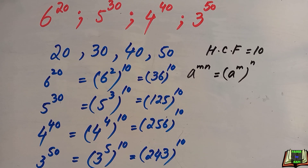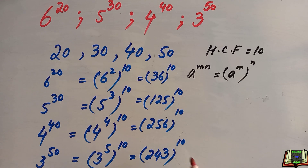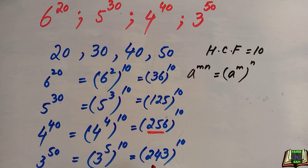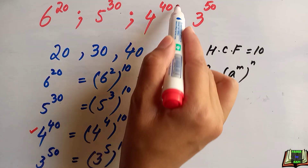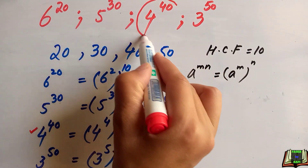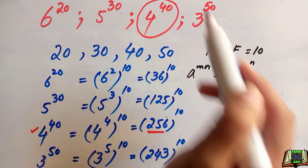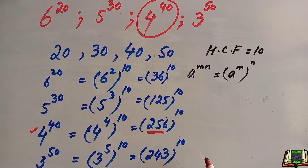Now all the numbers are expressed with the same power of 10, so we can easily find the largest number. 256 is the largest base value, so 4 to the power 40 is the largest number. Write your answer in the comment box and subscribe to this channel for more videos. Thanks for watching!